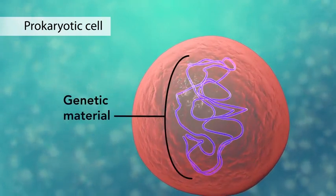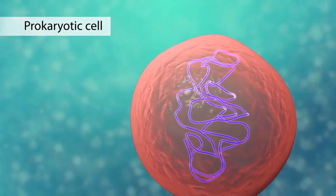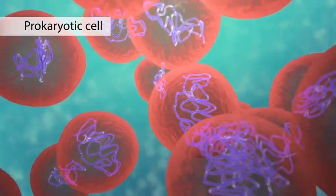They do have genetic material, but it's not contained within a nucleus. Prokaryotic cells are always one-celled, or unicellular organisms, such as bacteria.